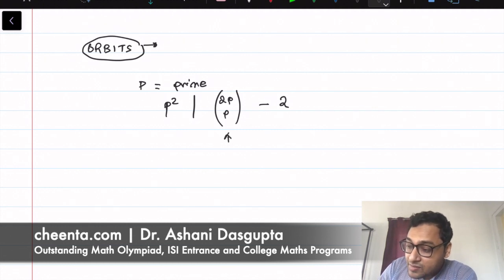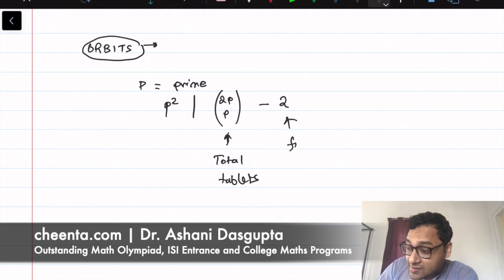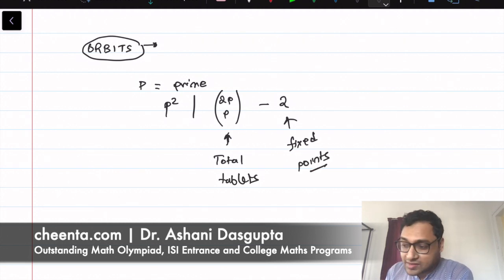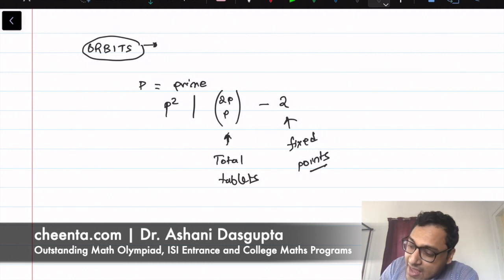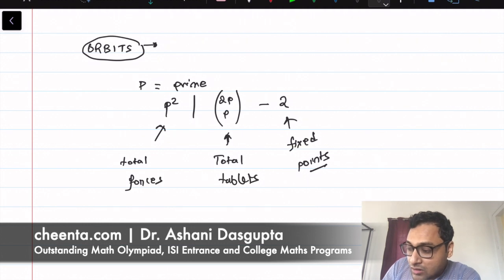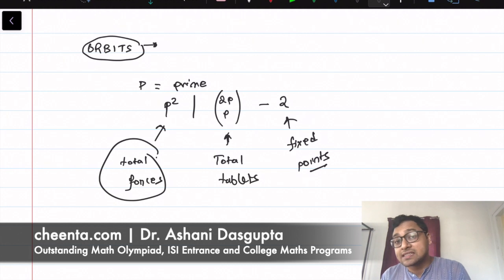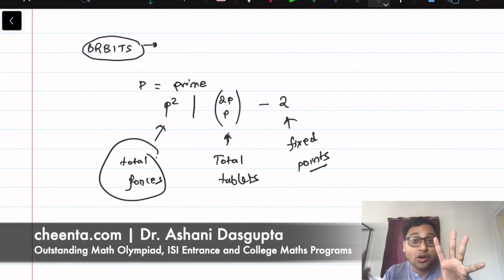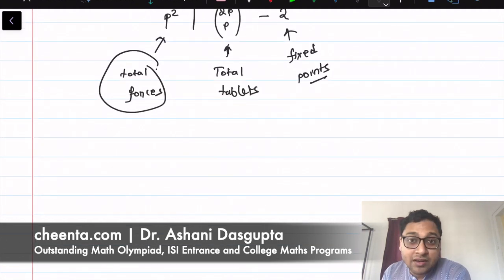We said that this is the total number of tablets. These are the fixed points. So we learned about fixed points in number theory and combinatorics — that's a very important concept. Two tablets which do not transform under any of the forces. We want to show that the total number of forces divides the number of tablets minus the ones which do not transform at all. In this video, we will learn how to use the notion of orbits to show exactly that.